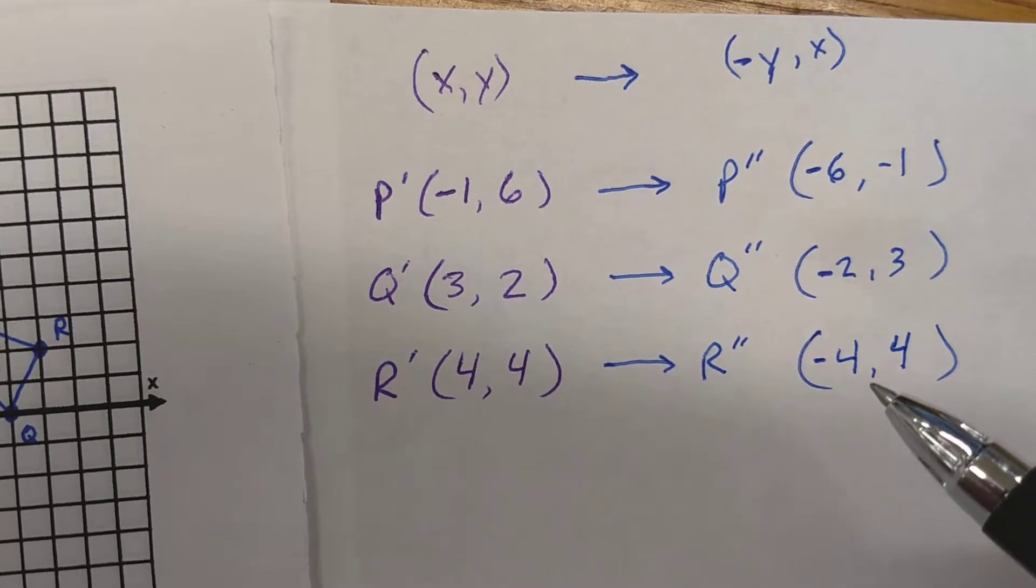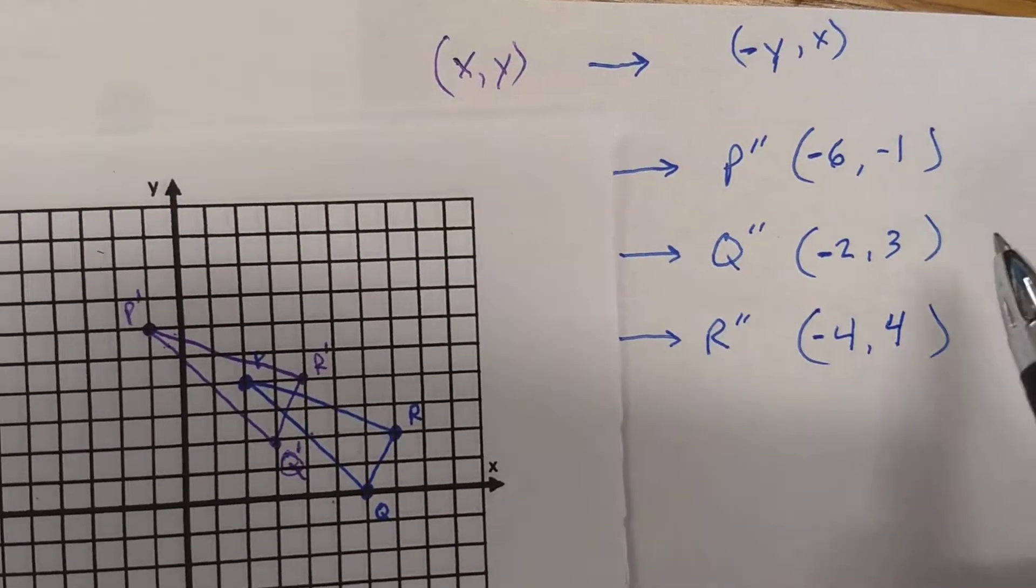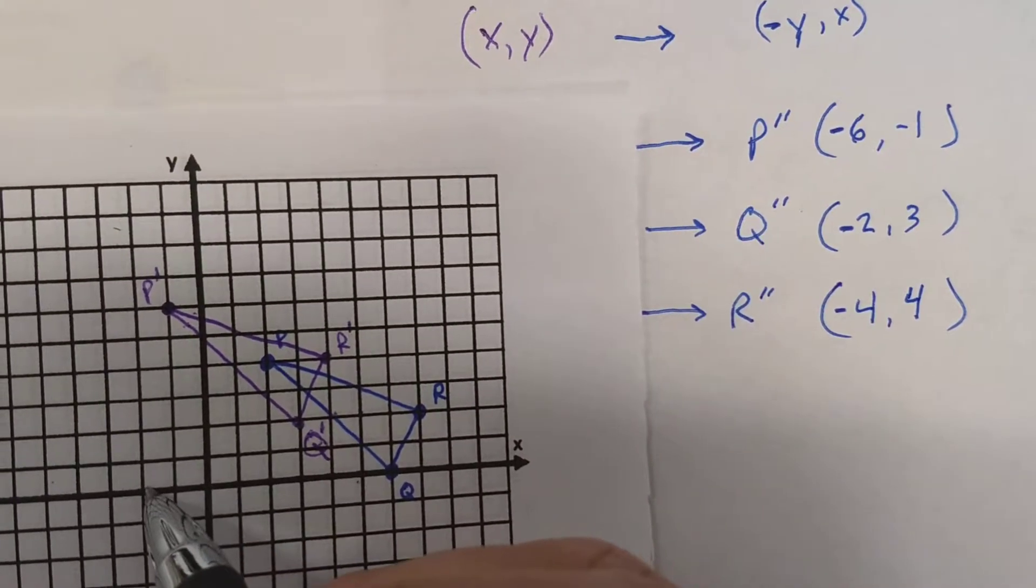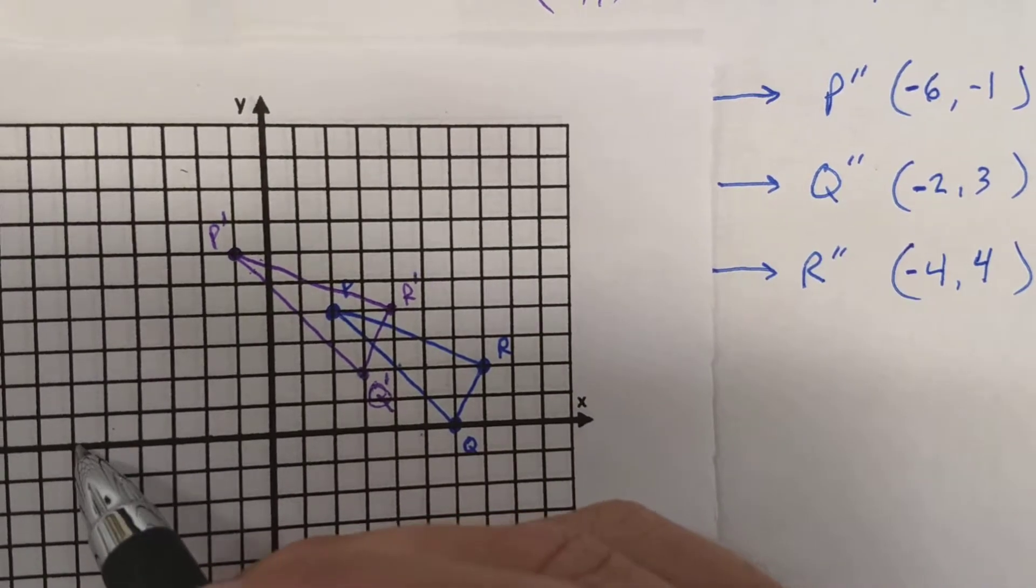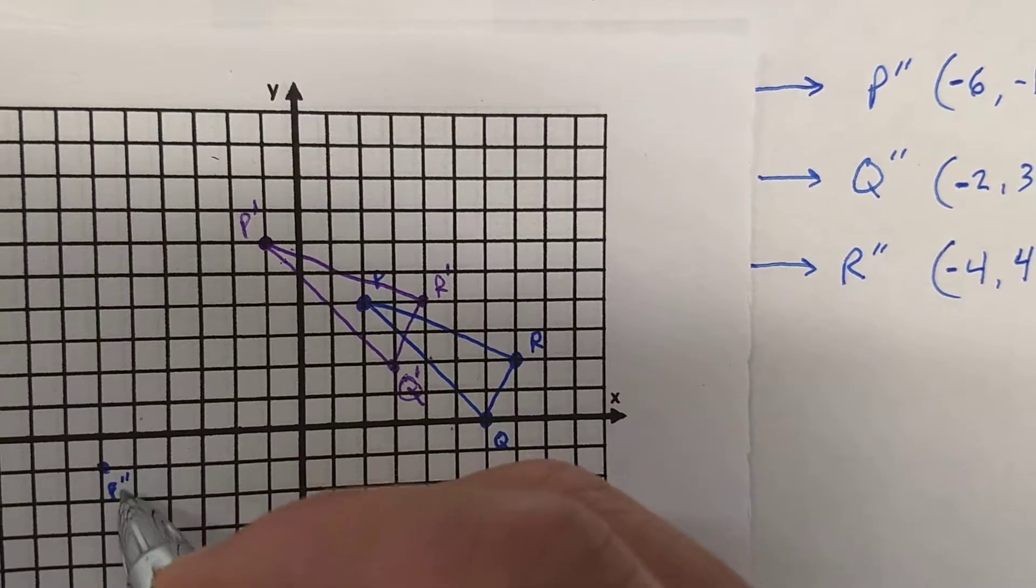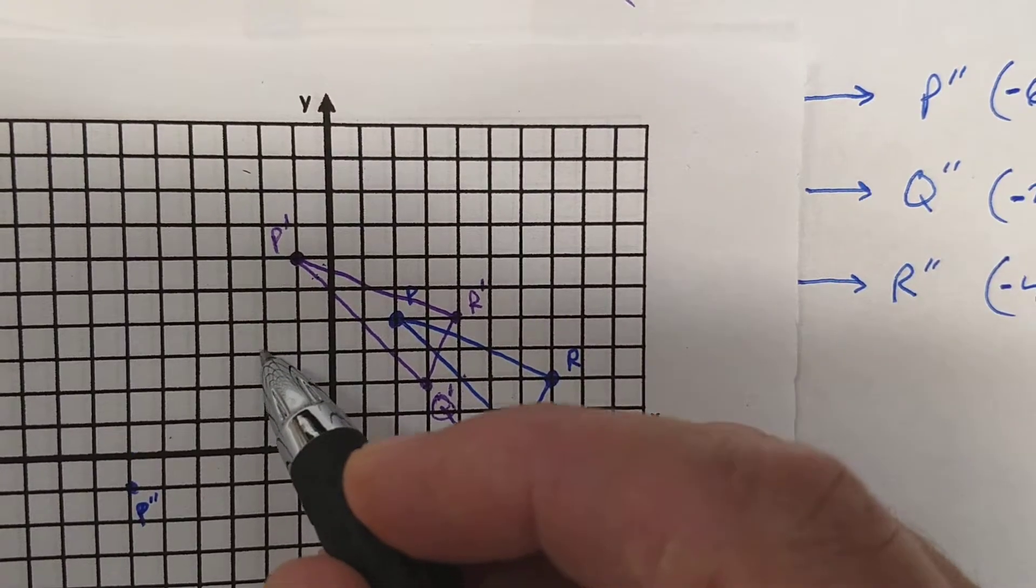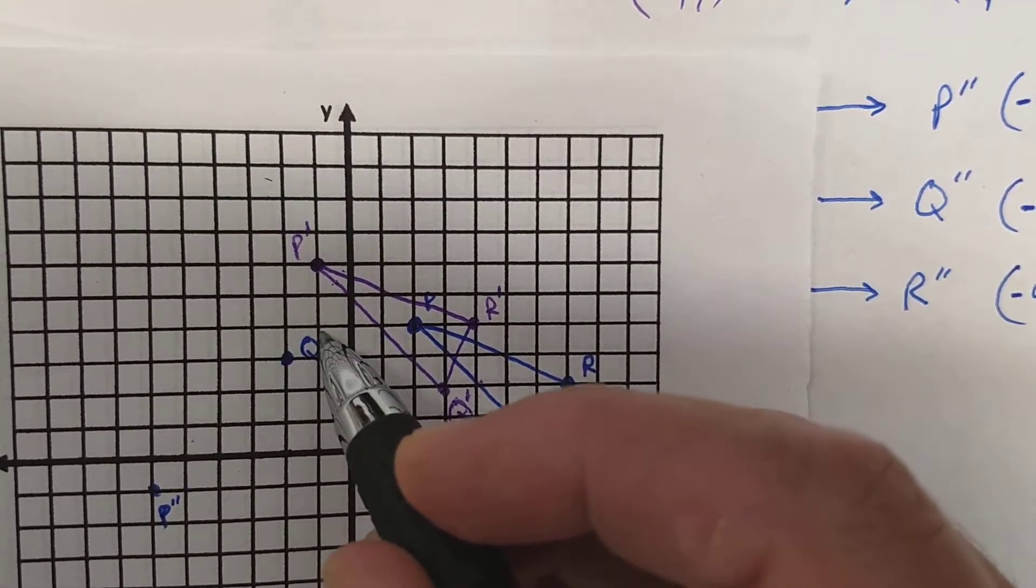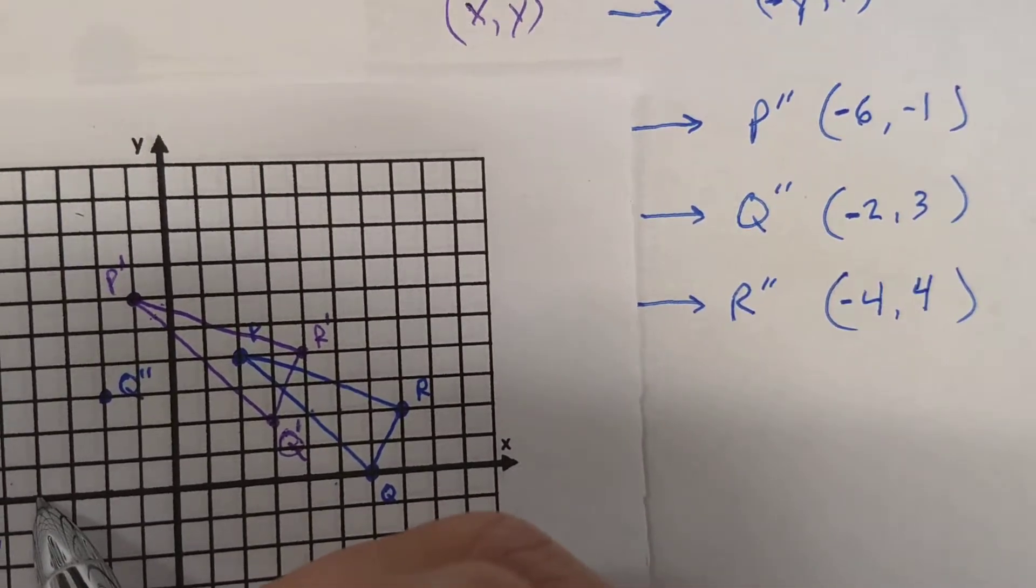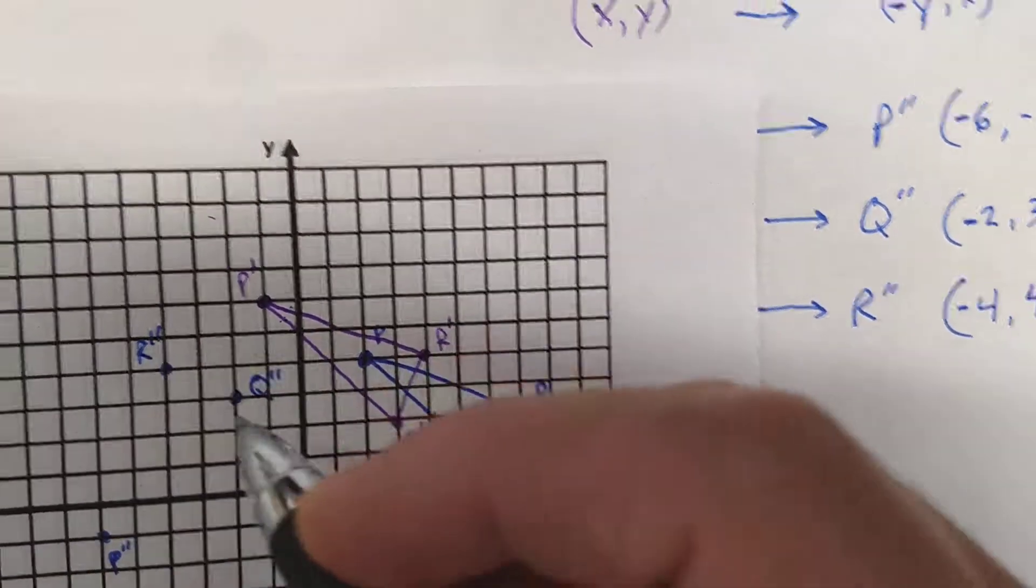Those should be the three coordinates that will allow us to graph that double prime image. So let's move those back onto the graph. P double prime is listed at negative 6, negative 1. So 1, 2, 3, 4, 5, 6, and negative 1. That should be our p double prime. Negative 2, 3. Negative 2, positive 3. That is our q double prime. And finally, negative 4, 4. Negative 4, positive 4. That is our r double prime.